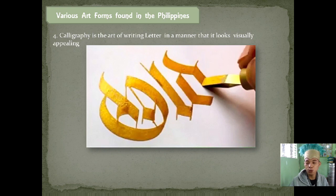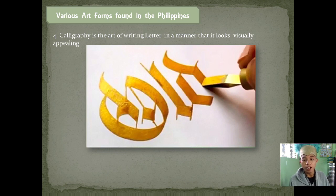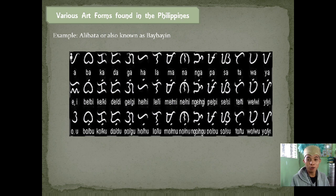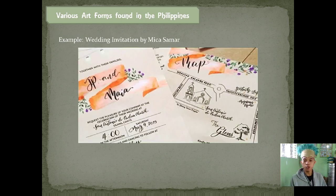Still under visual arts is calligraphy — the art of writing letters in a manner that looks visually appealing. The best example is the Alibata, also known as Baybayin. Even before the colonizers arrived, our country already had its own calligraphy system. Another example is a wedding invitation made by one of the famous calligraphy artists in the Philippines, Mecca Sama. You can also create your own design.